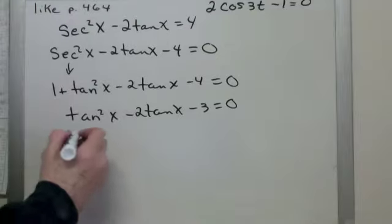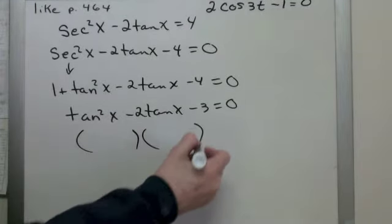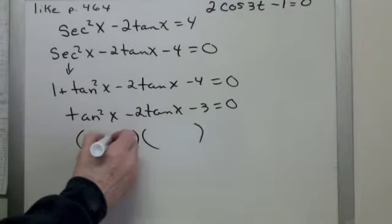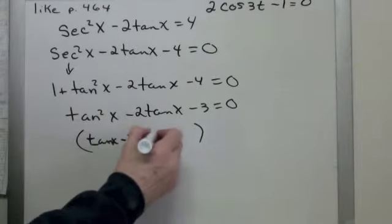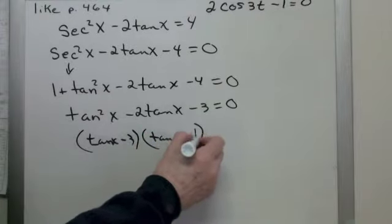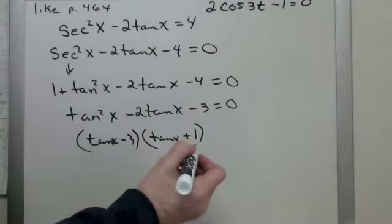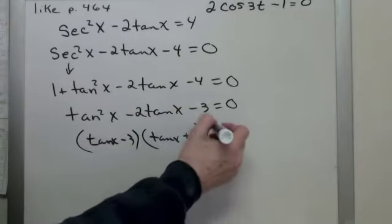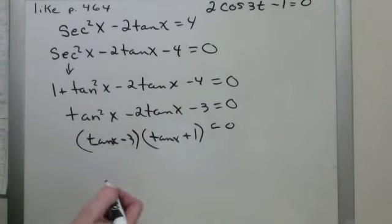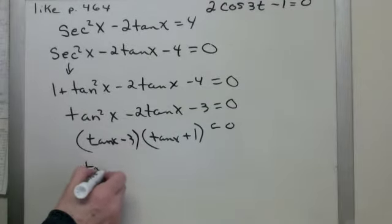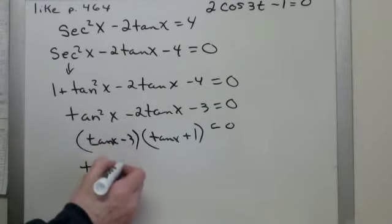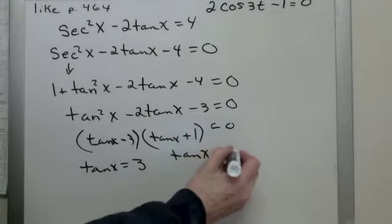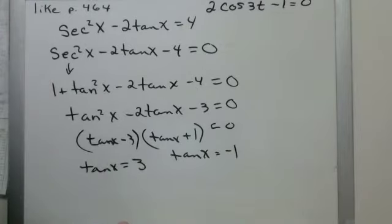1 plus tan squared x minus 2 tan x minus 4 equals 0. Now, add some like terms. Tan squared x minus 2 tan x minus 3 equals 0. And hopefully, this factors. Tan x minus 3 times tan x plus 1 equals 0. So, now I set each part equal to 0. Tan x minus 3 equals 0, so tan x equals 3, and tan x equals negative 1.